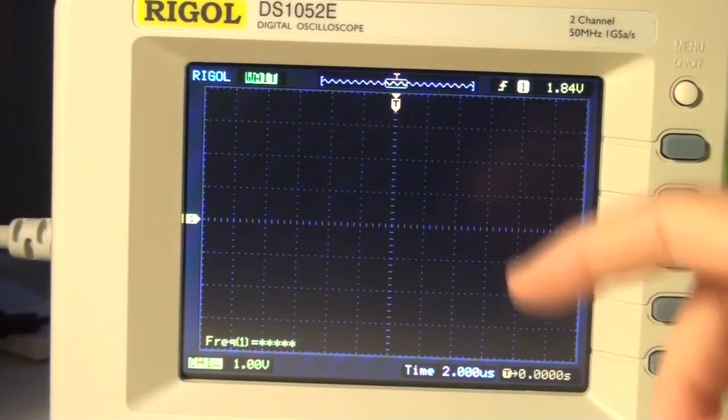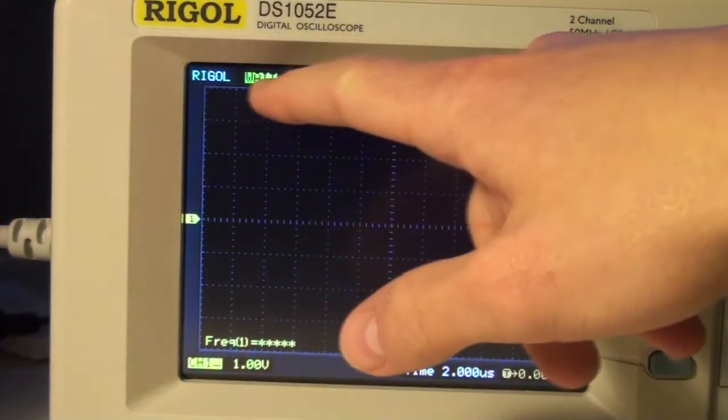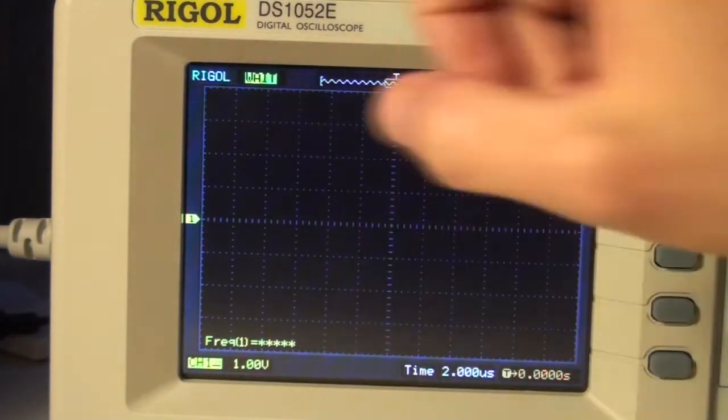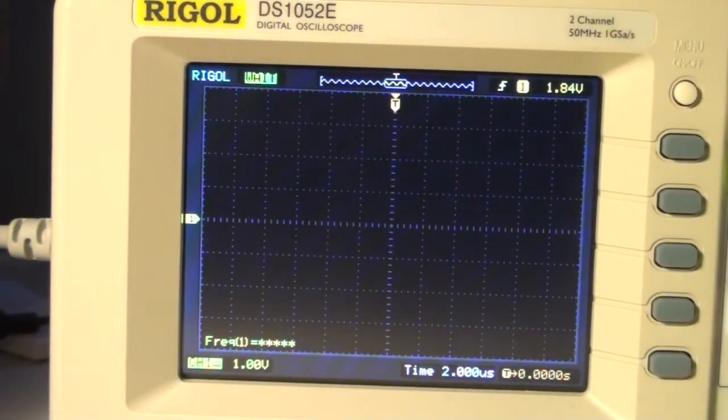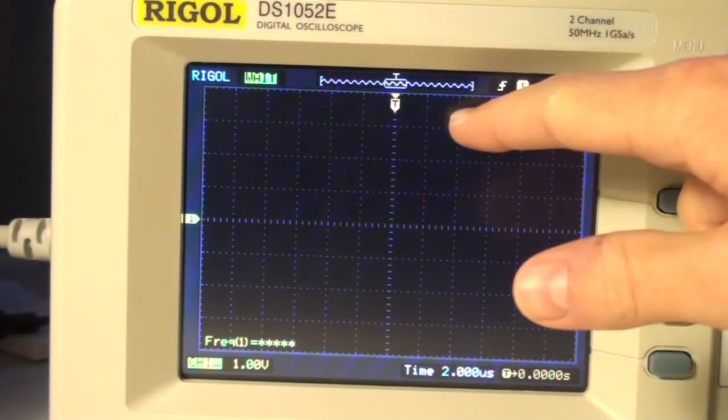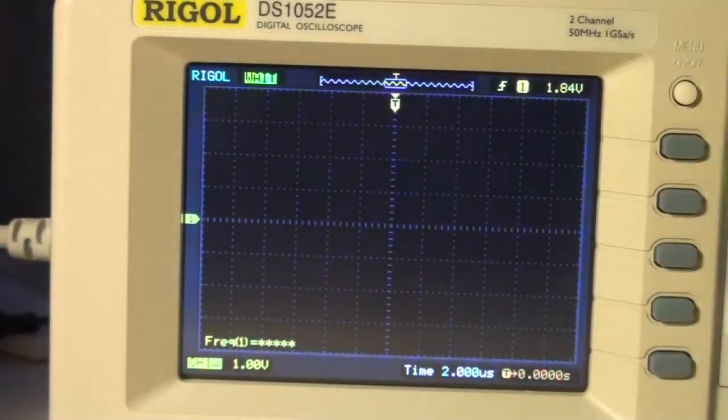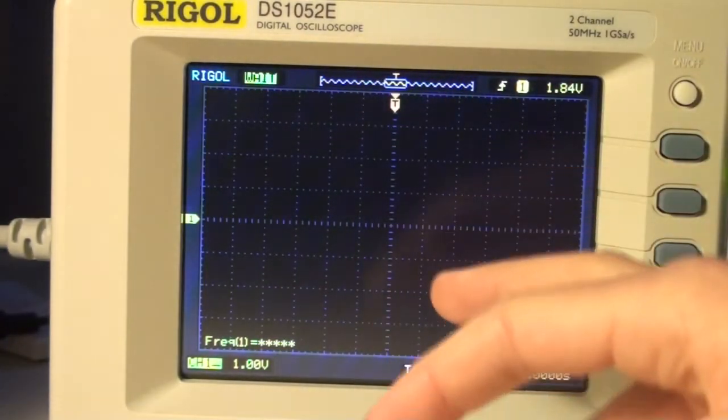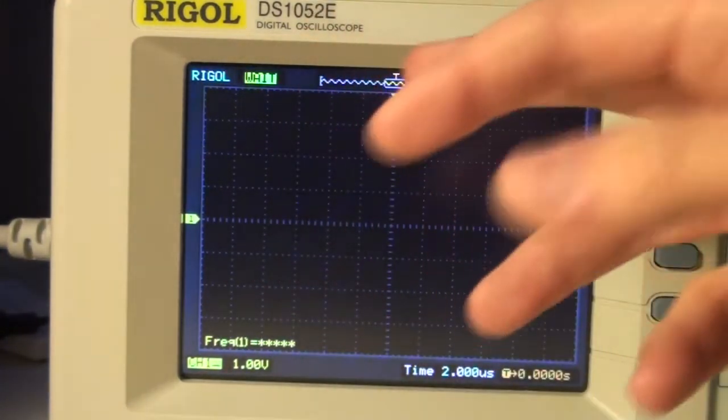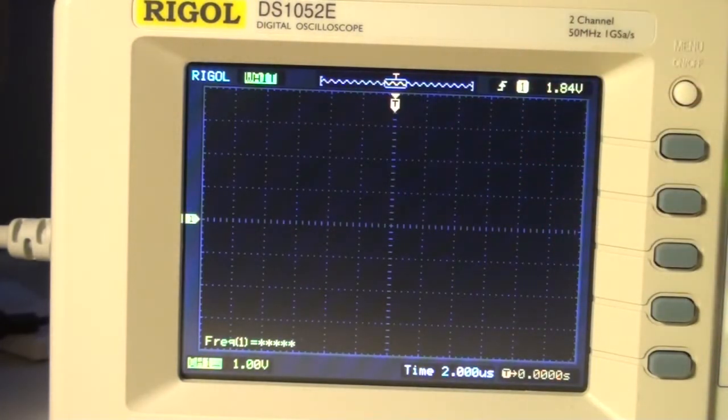In the top, we see Rigol, and we see 'wait' blinking because it's waiting on a signal. And then we have a bar indicating in which frame we are viewing currently, because it has some internal storage. It's a storage scope, so we can move this frame.